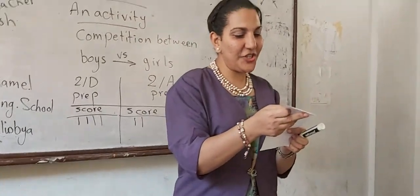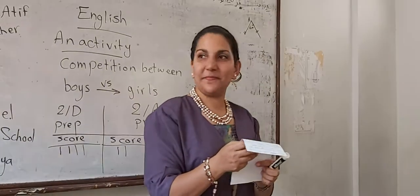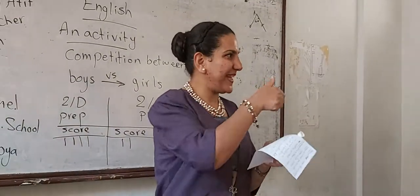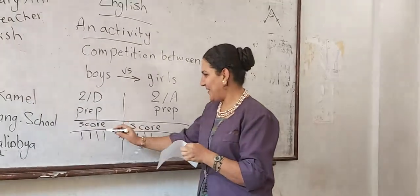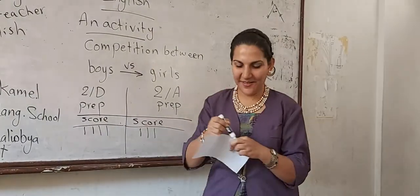Where is the large sea animal? Excellent. The score is now four to three.